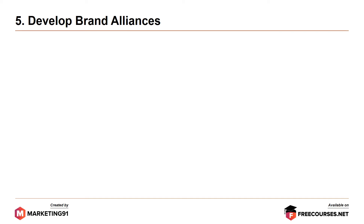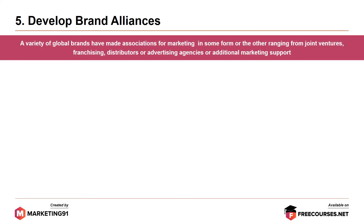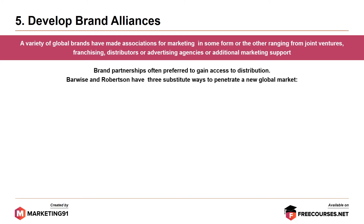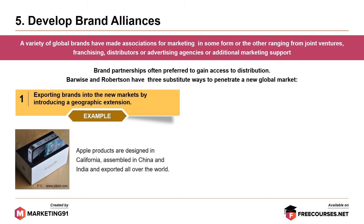Moving on to the fifth commandment: develop brand alliances. A variety of global brands have made associations for marketing ranging from joint ventures, franchising, distributors, advertising agencies, or additional marketing support. Brand partnerships often prefer to gain access to distribution. There are three ways to penetrate a new global market. First, exporting brands into new markets by introducing a geographic extension — for example, Apple products are designed in California, assembled in China and India, and then exported all over the world.